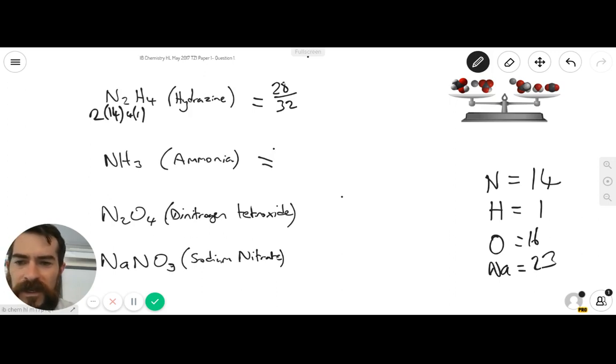For ammonia, we have one nitrogen here, which is 14, and then we have three hydrogens to give you 14 over 17. So at the moment, it's very close between hydrazine and ammonia as to which compound has the most nitrogen by mass.